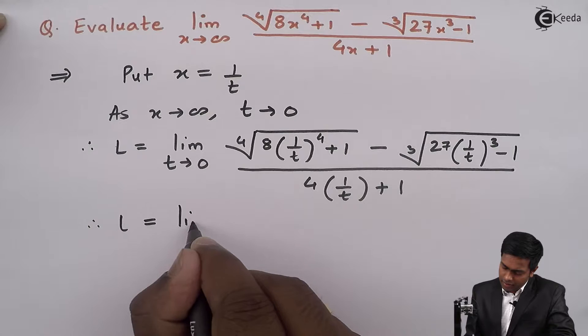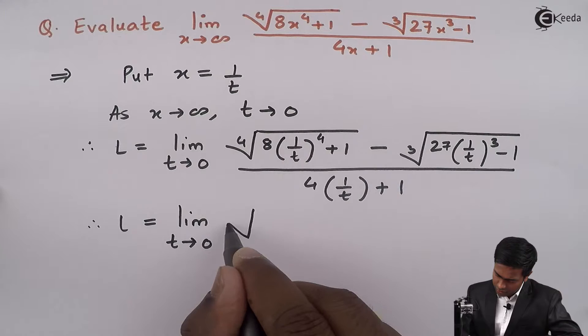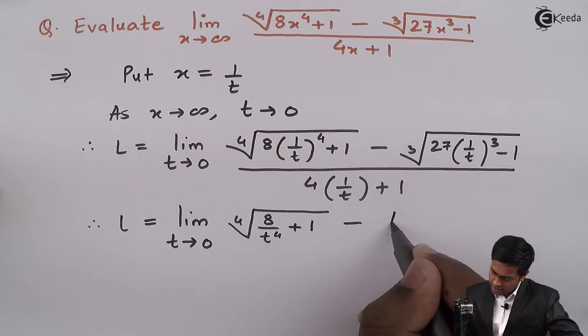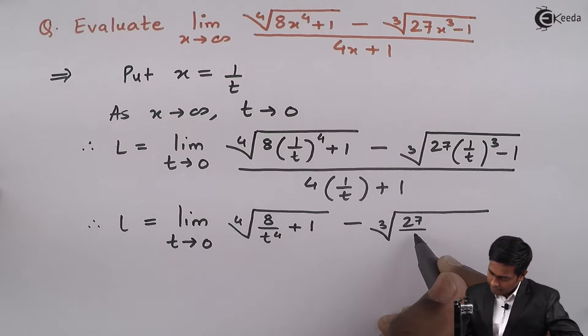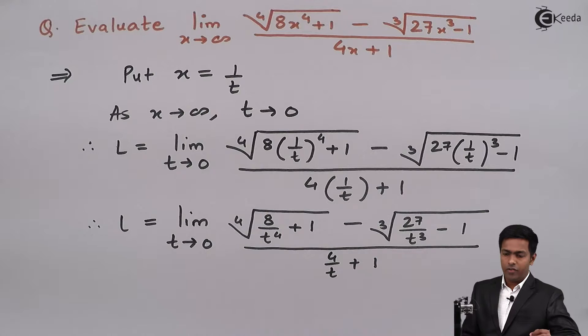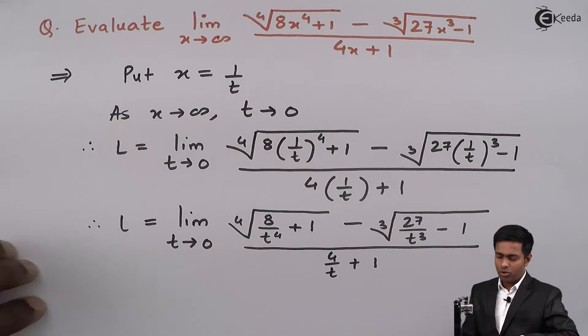Then L becomes limit t tends to 0. After simplifying, we get 4th root of (8/t⁴ + 1), which gives 4th root of (8 + t⁴) / t⁴. Similarly, the cube root term gives cube root of (27 - t³) / t³. The denominator becomes (4 + t) / t.